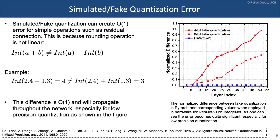While performing simulated quantization does help accuracy when running in PyTorch, if you run this in hardware, you're going to get very high error, especially for low precision quantization. We computed this error even without the batch normalization problem: just the residual connection problem alone can create 50% L2 difference between activations on integer-only hardware versus simulation, for ResNet50 on ImageNet. At 4-bit, it can be as high as 100%.